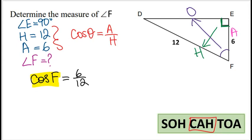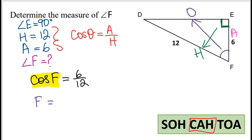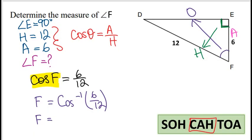This is not cos times f; this is cos of f. To cancel this, we are going to take the inverse of cos, and we do that on both sides. So f equals cos inverse of 6 over 12. Use the second function key on your calculator, make sure it is in degrees mode, press second function, press cos, and enter 6 over 12. Your answer is 60 degrees. Angle f is 60 degrees.